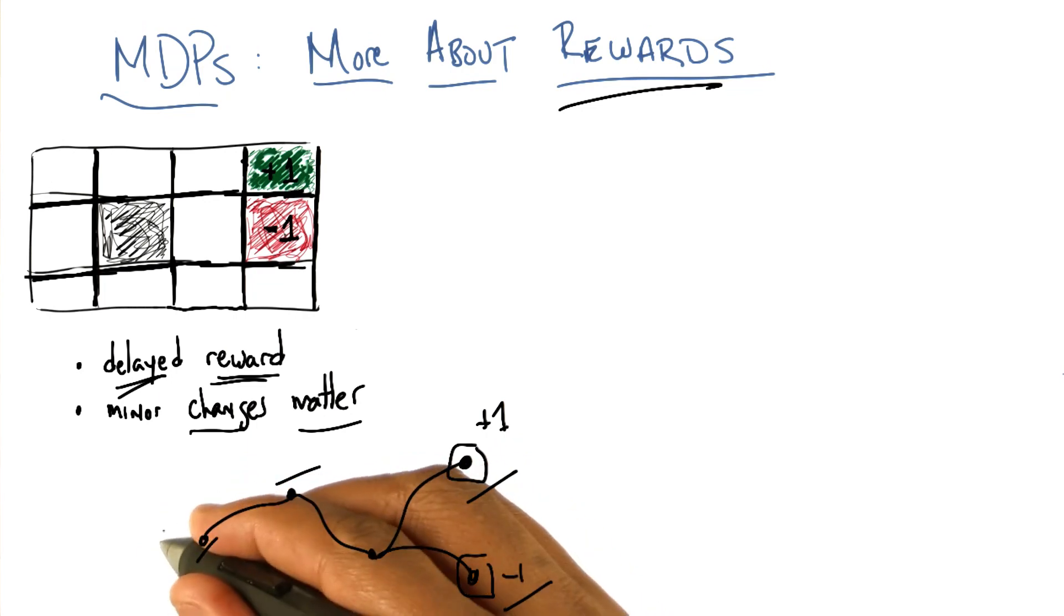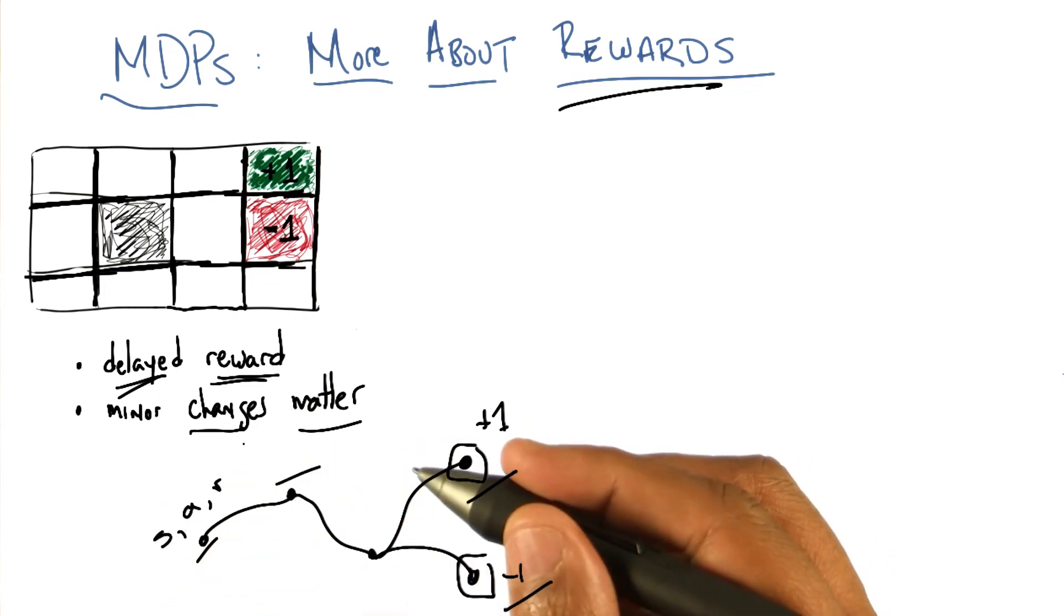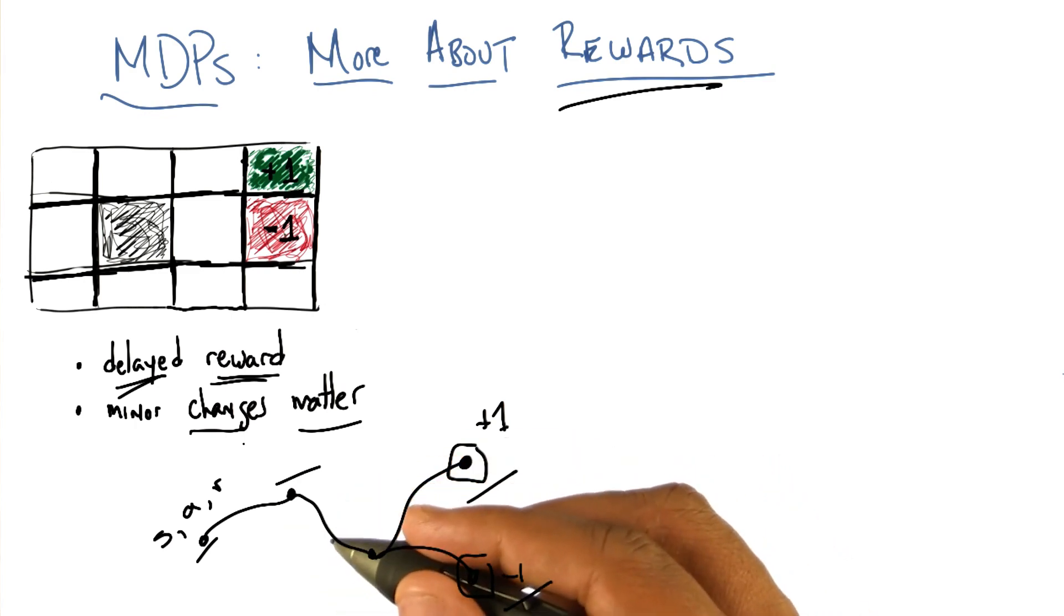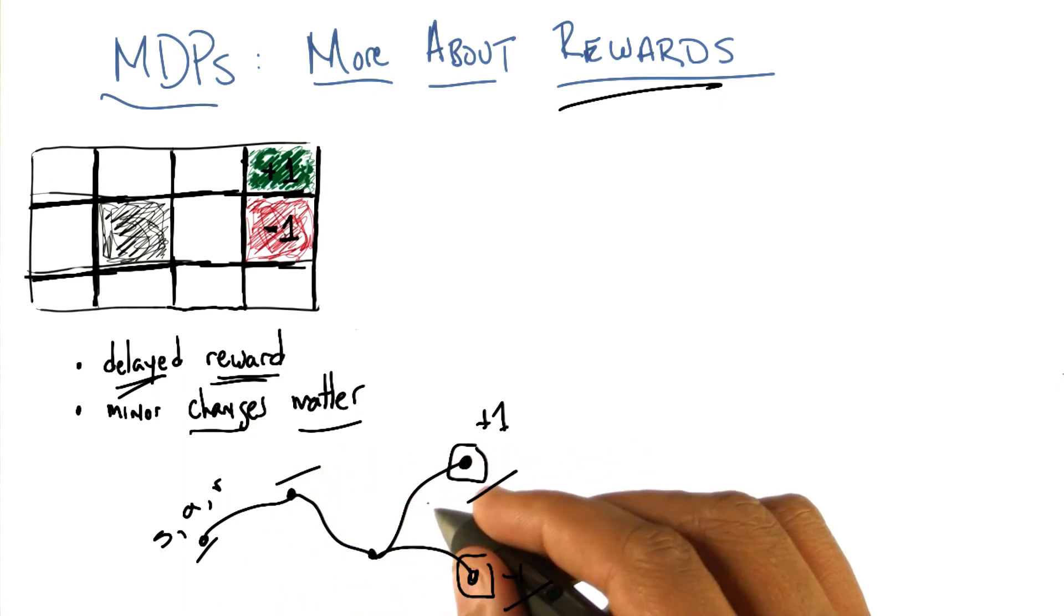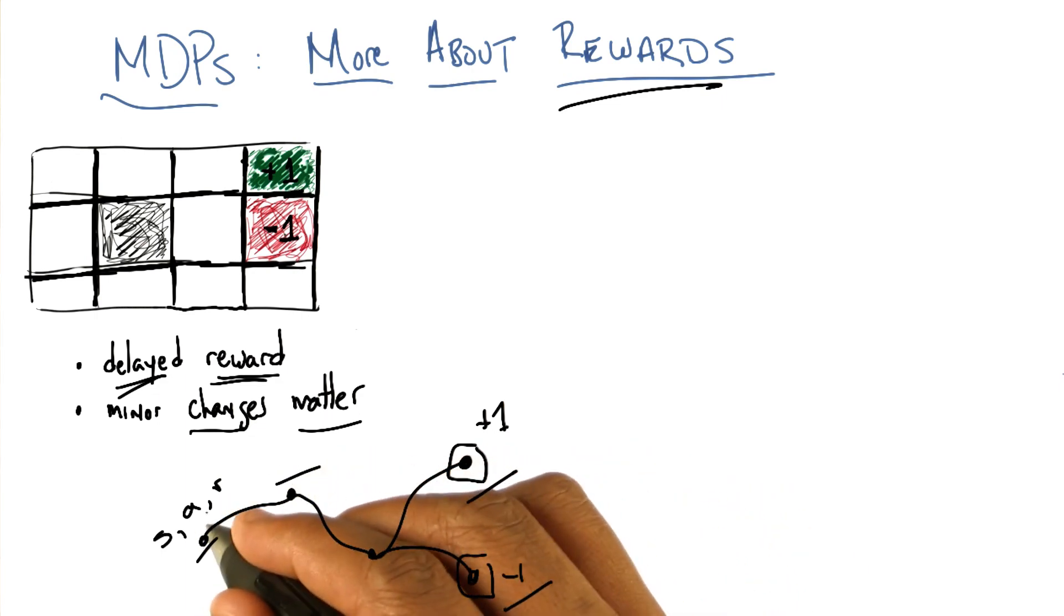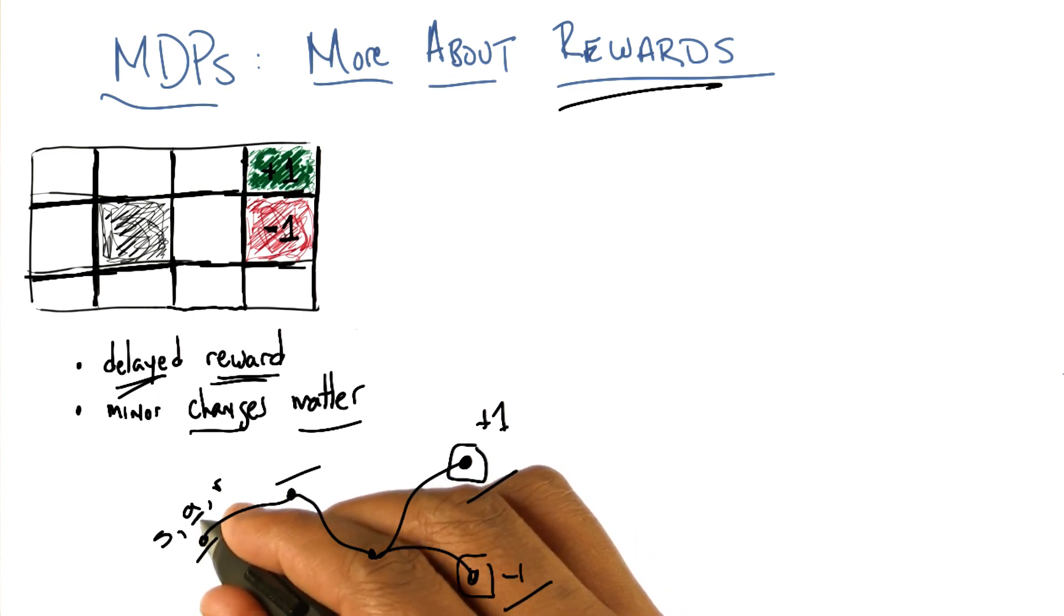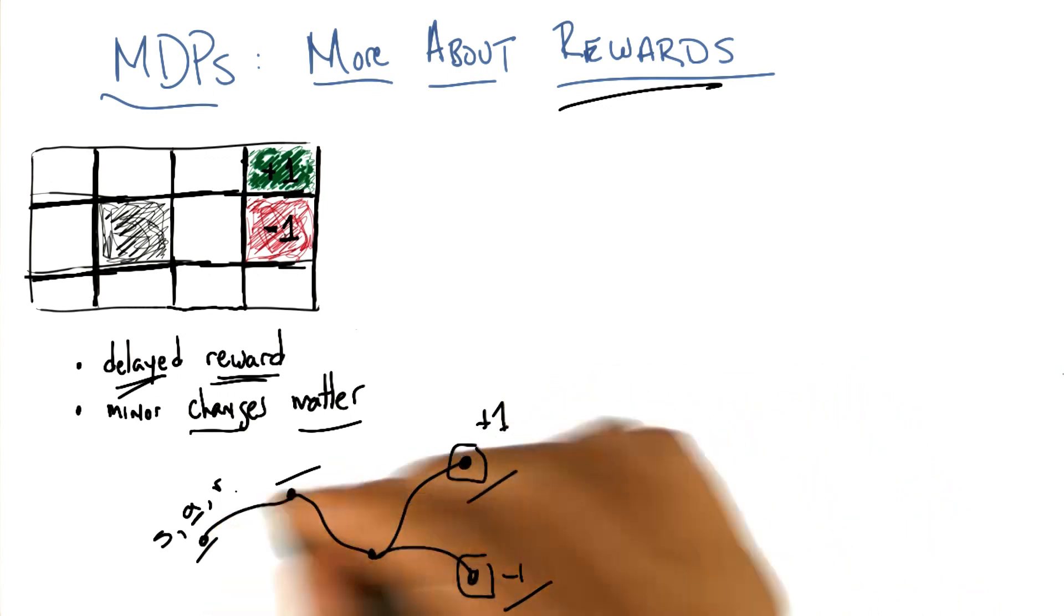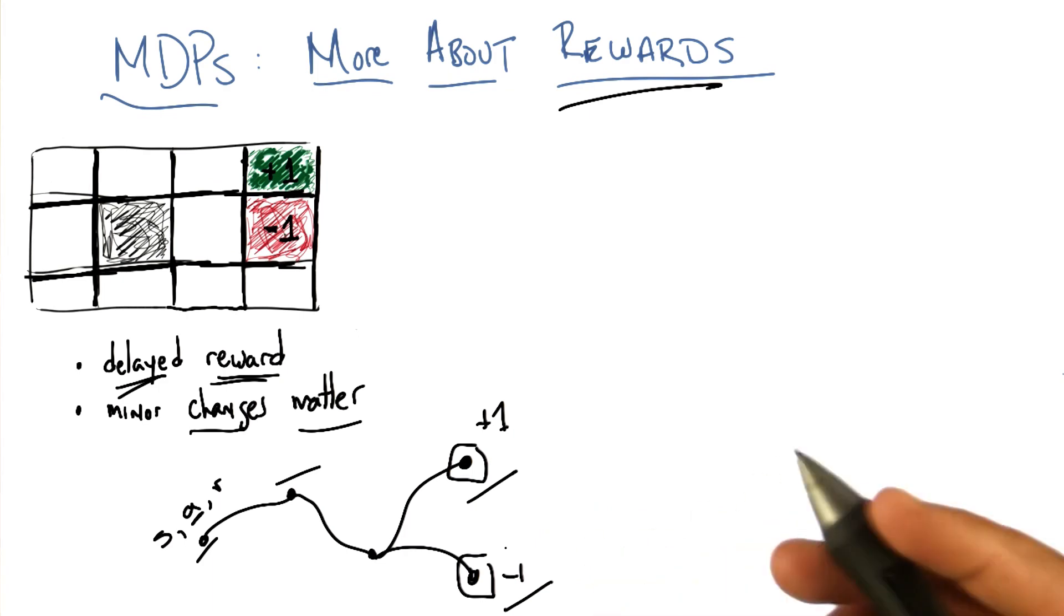In this particular case, you're in some state, you take some action, and you get some reward for the action that you took. Or maybe the state that you ended up in, or something. And you get a sequence of these state action reward triples, and then ultimately you have to figure out, for the given state you were in, what was the action you took that helped to determine, or actions you took that helped to determine the ultimate sequence of rewards that you saw. Perhaps this one, plus one, or this minus one that you got at the end. This is a really difficult problem. It's got its own name. It's called the credit assignment problem.